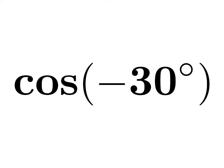In this video, we will learn to find the value of cosine of minus 30 degrees. As we know, the trigonometry identity cosine of minus x is equal to cosine of x.